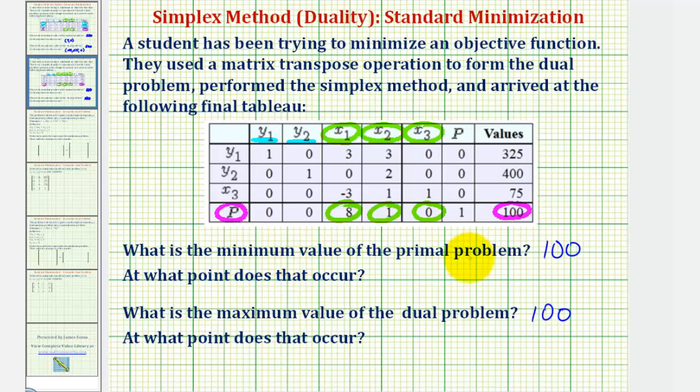So the point at which this minimum value occurs is x sub 1, x sub 2, x sub 3, or in this case 8, comma 1, comma 0.